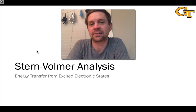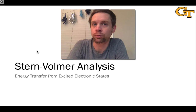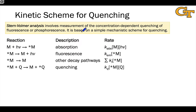Here we're going to look at Stern-Volmer analysis in detail, derive the Stern-Volmer relation, and talk about the information we can get from a Stern-Volmer plot, which is the empirical centerpiece of Stern-Volmer analysis. The basic idea is to measure the dependence of the fluorescence or phosphorescence associated with an excited state — a singlet in the case of fluorescence or a triplet in the case of phosphorescence — on the concentration of a quencher.